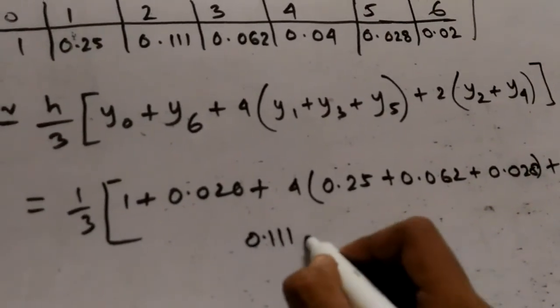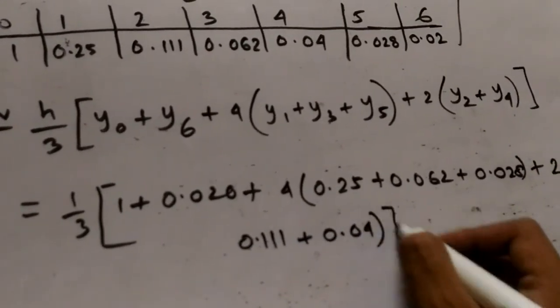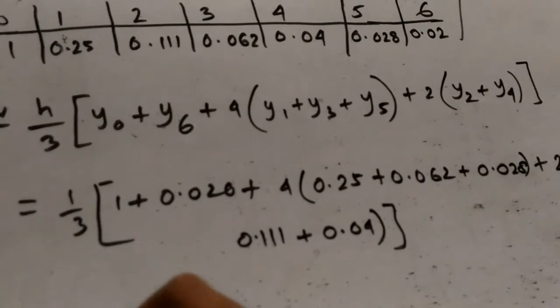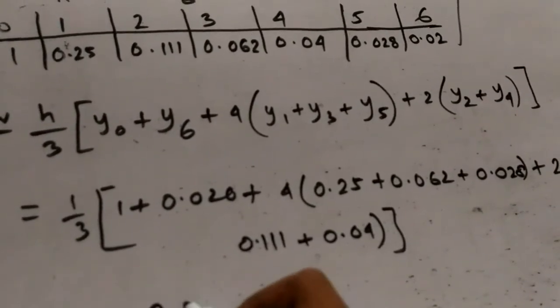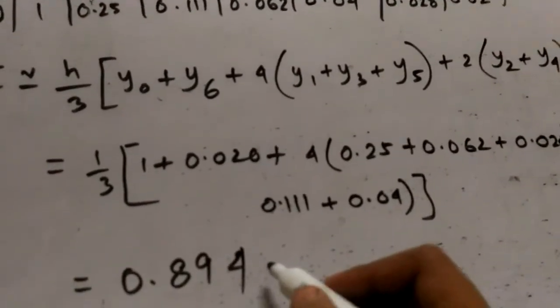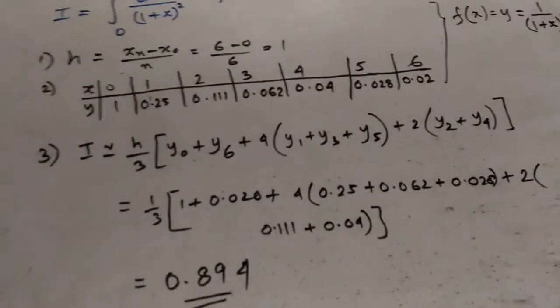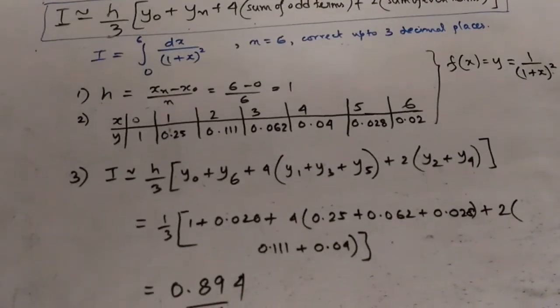Which equals 0.894 approximately, and also you can see that it is up to 3 decimal places. So this is our problem.